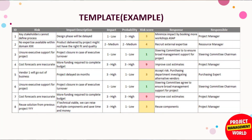Now let's see how the risk register looks and what columns it has. Here you can see a template example. We have several columns: first is ID — each risk gets a unique ID or serial number. The second column is the risk description, which we get from the identification process. Then we have the impact description — a proper description of what could happen if this risk occurs.